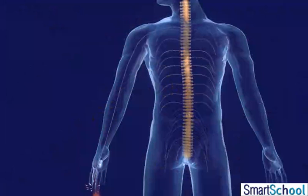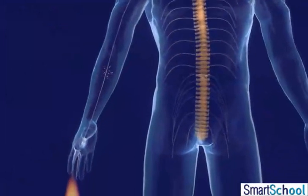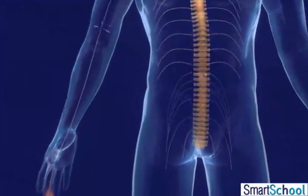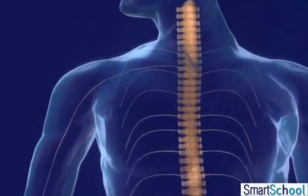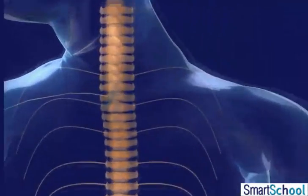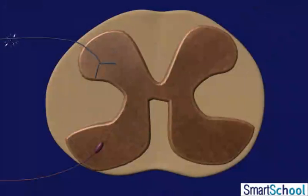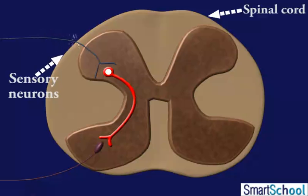When our hand accidentally touches a hot object, the heat is sensed by thermoreceptors present in the skin of the hands. The receptors trigger nerve impulses in sensory neurons, which transmit the message to the spinal cord.